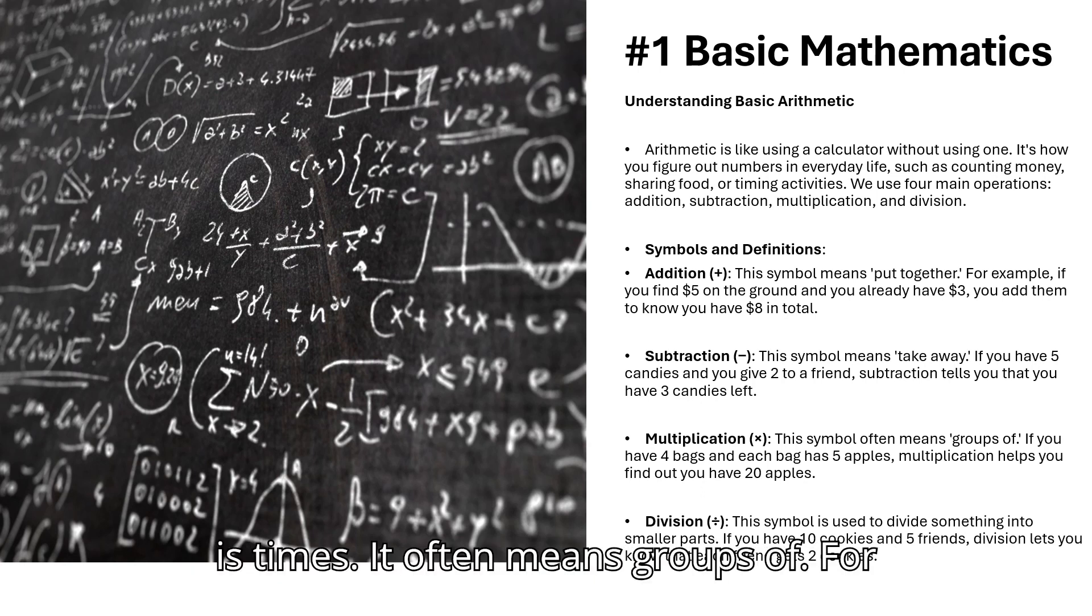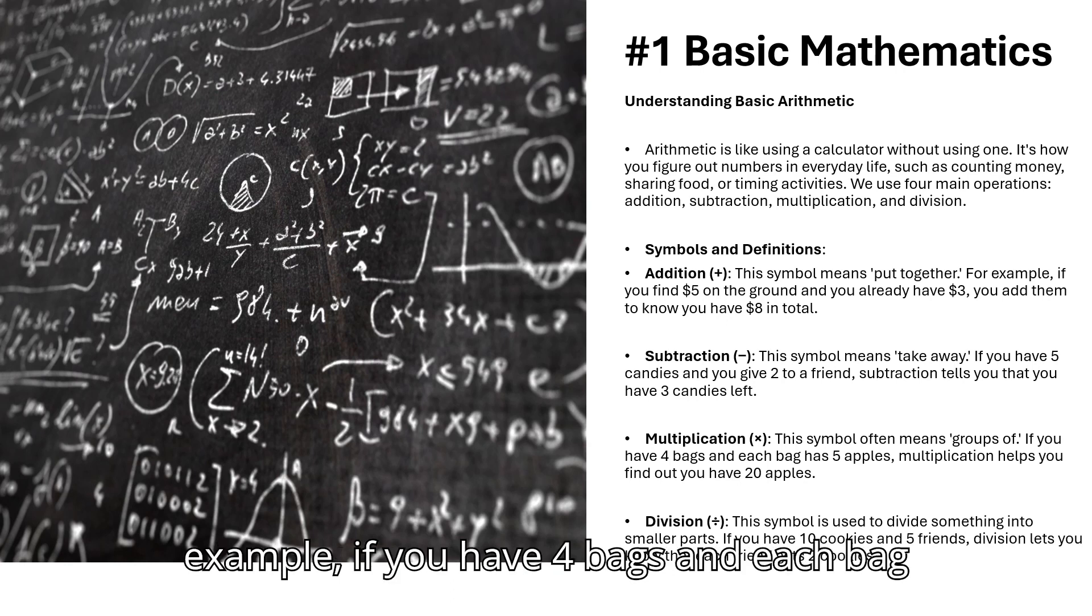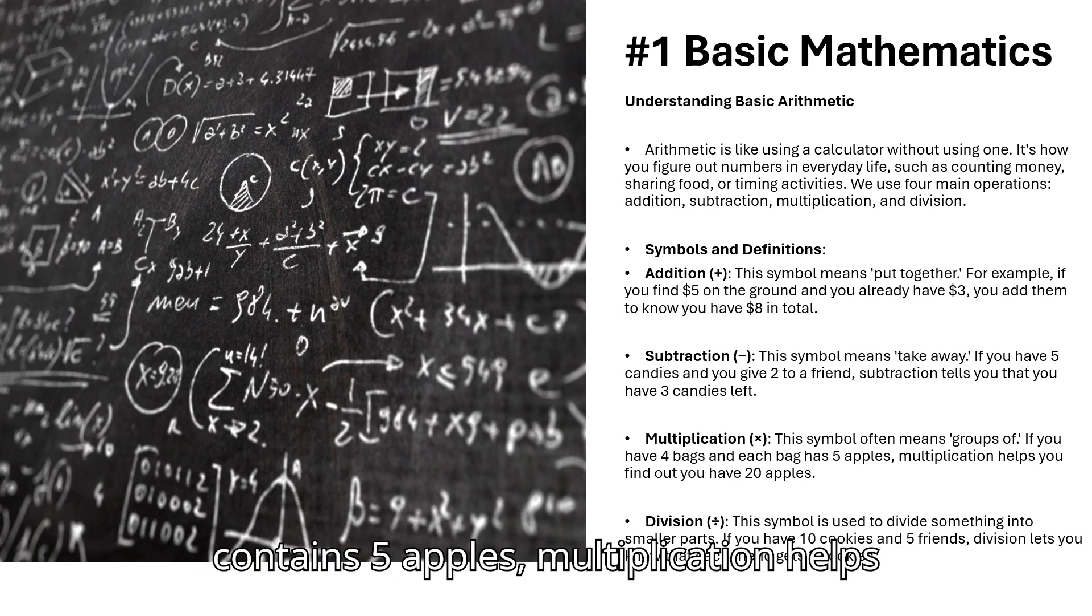Multiplication - the multiplication symbol is times. It often means groups of. For example, if you have 4 bags and each bag contains 5 apples, multiplication helps you find out that you have 20 apples.